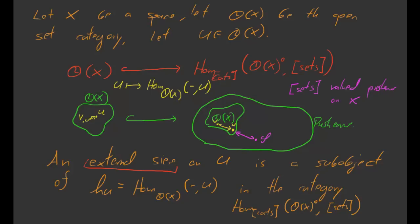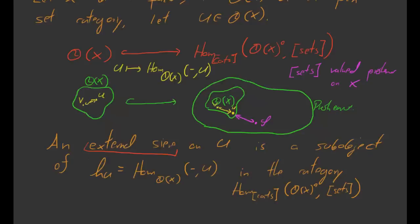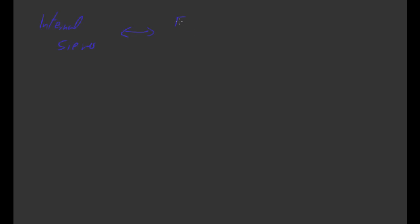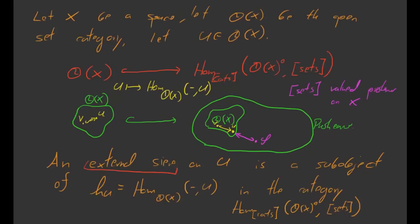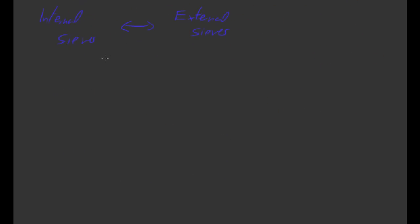I don't think I'm going to prove this in the mainline videos, but these two notions are equivalent — internal sieves and external sieves are basically the same thing. One way of thinking about this is that an internal sieve is kind of a spreading out of a functor. An external sieve is a sub-object of h(U), so it's a functor, and the internal sieve spreads out that functor. The way you go from an internal sieve to an external sieve is just by organizing the data into a functor.